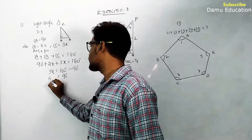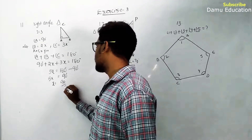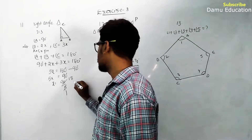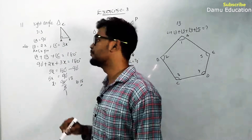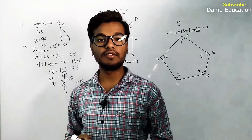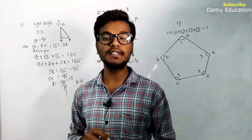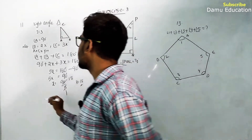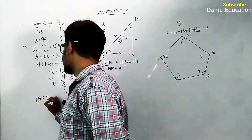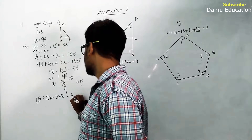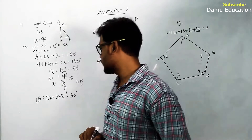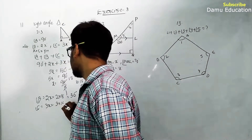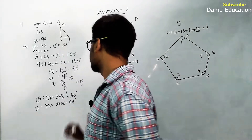Solving, x equals 90 divided by 5, so x equals 18. When ratios are given, we multiply by a constant x whose value we solve for. Therefore angle B equals 2x equals 2 into 18 equals 36 degrees.